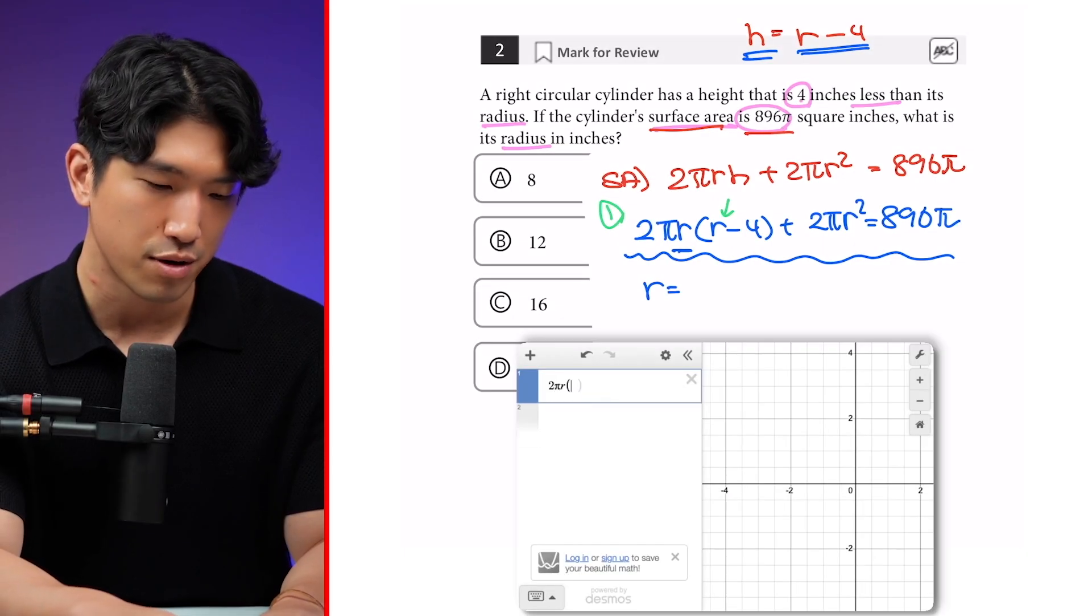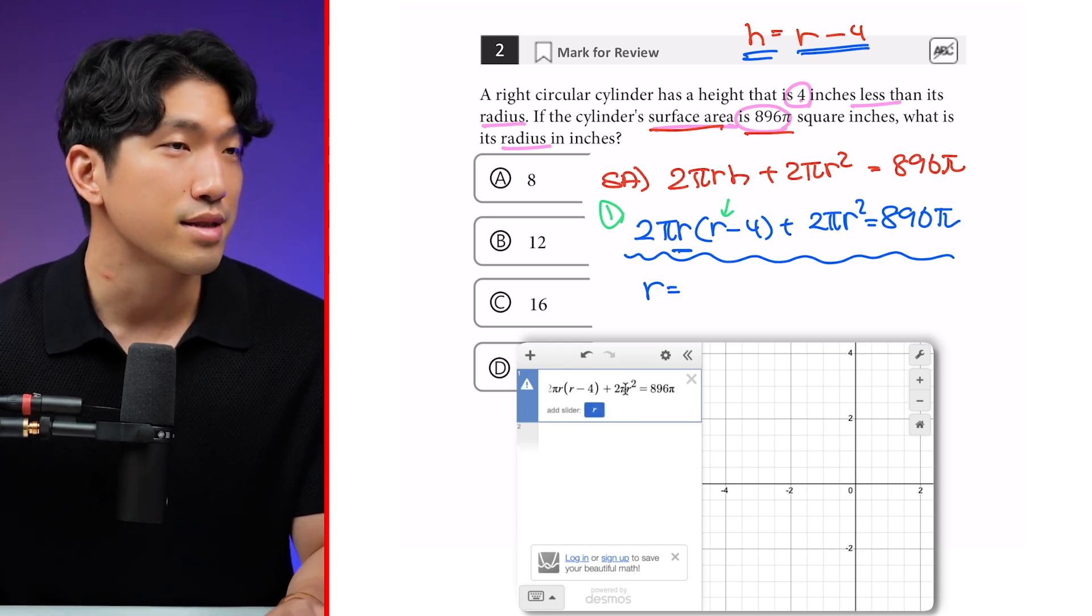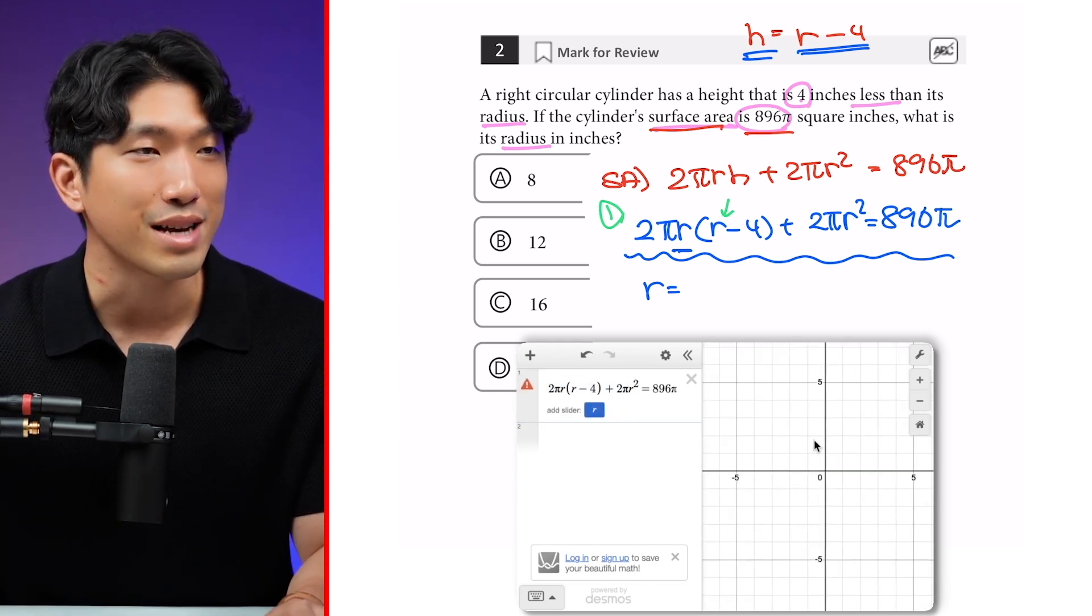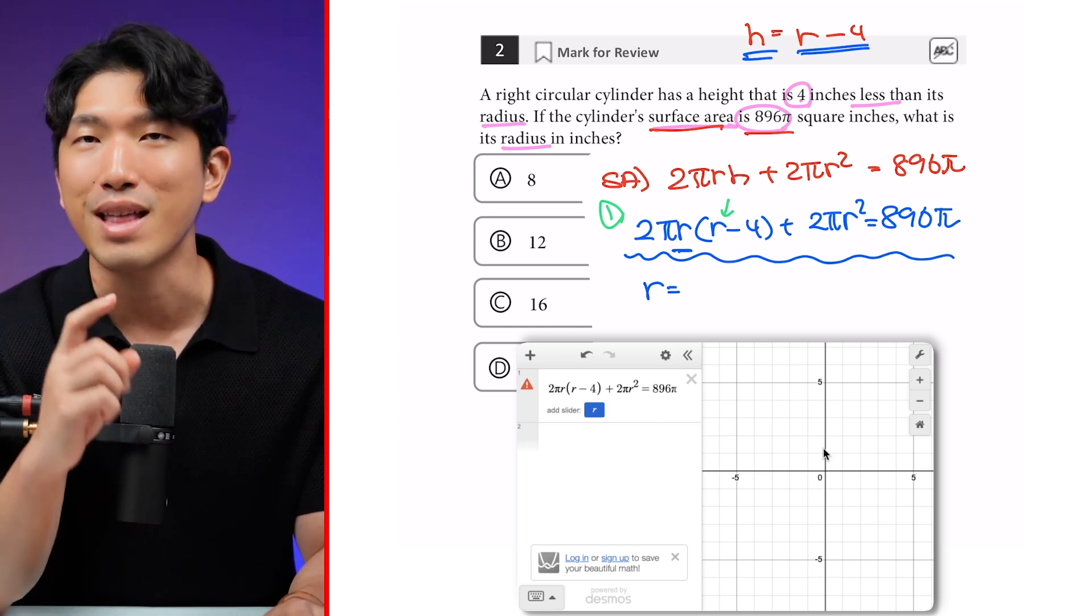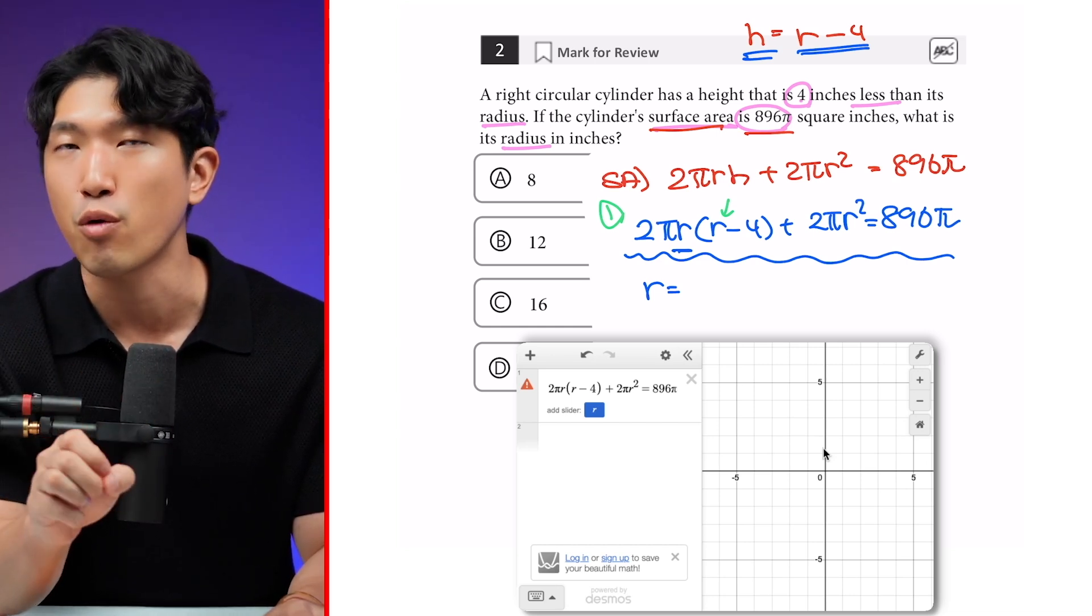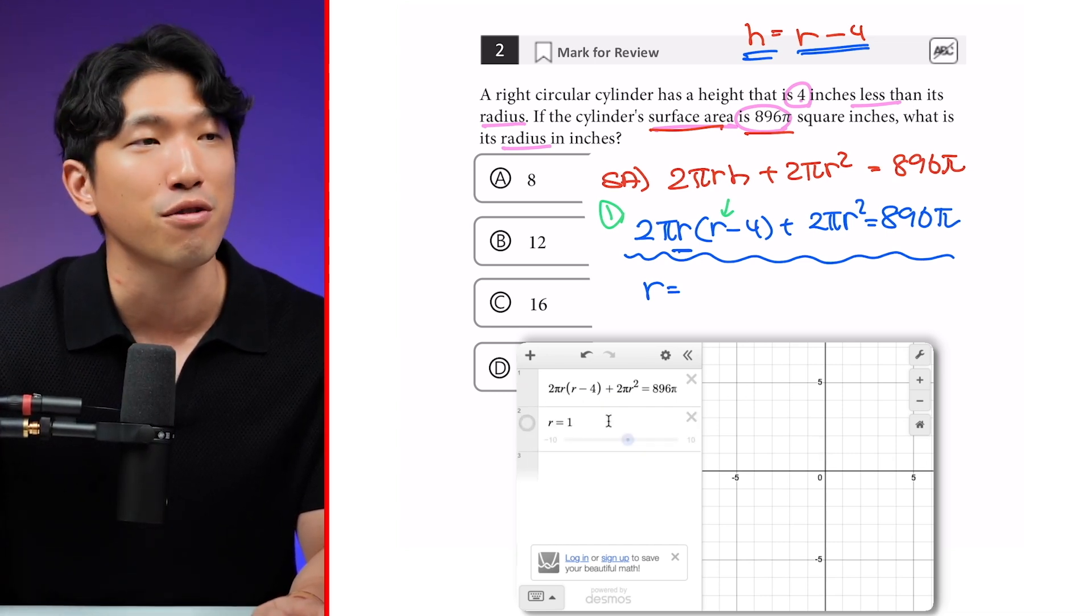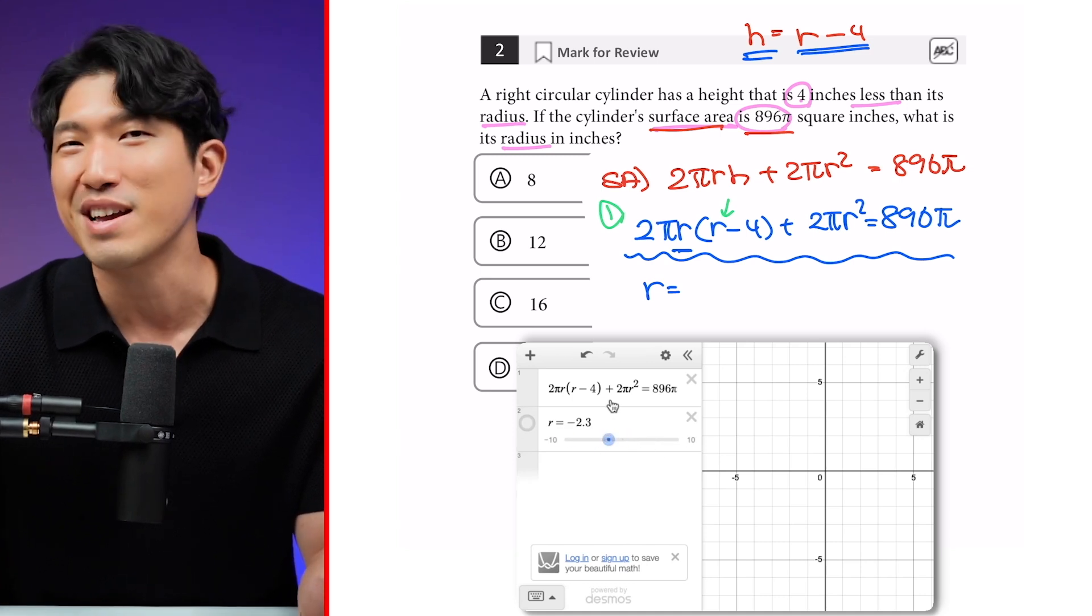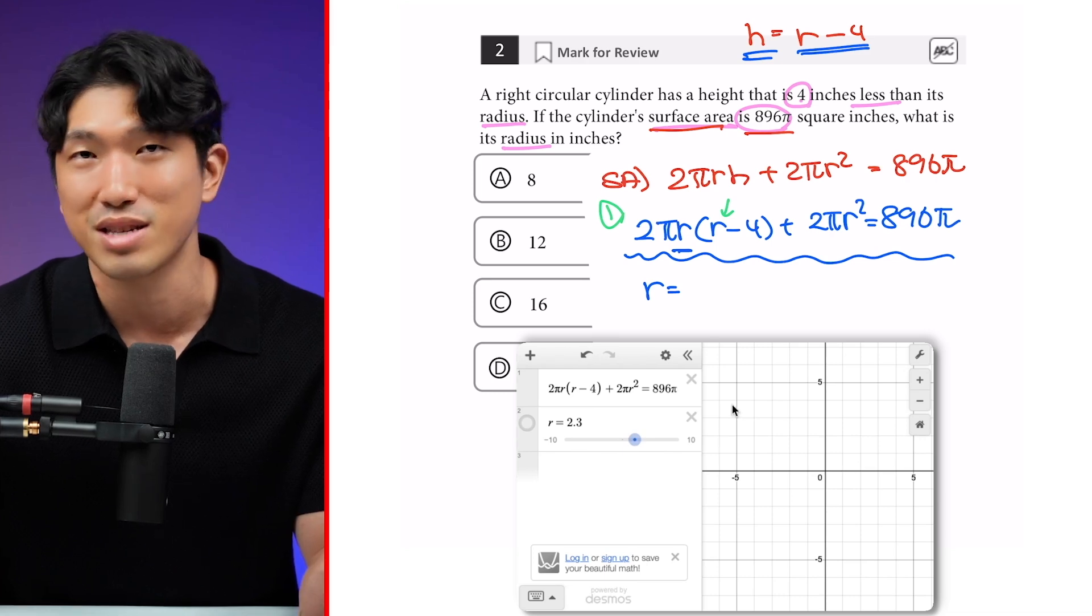So let's do that. So the equation is 2πr(r - 4). And look, there is nothing on the graph. There's literally no x-intercept anywhere. And that's because Desmos can only graph it if you have an x or y in the equation. If you have any other variables like r, it's going to ask you to plug in a value for r. And we're trying to find out what r is.